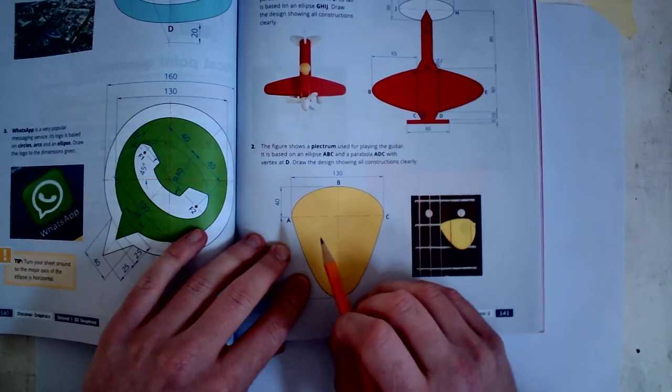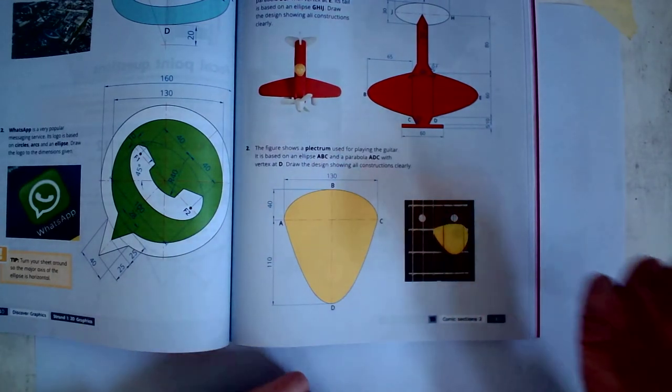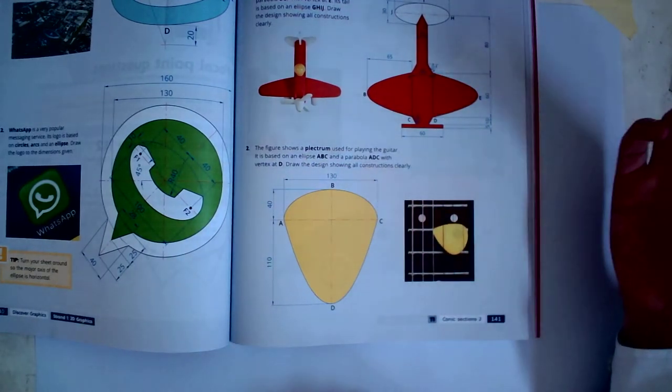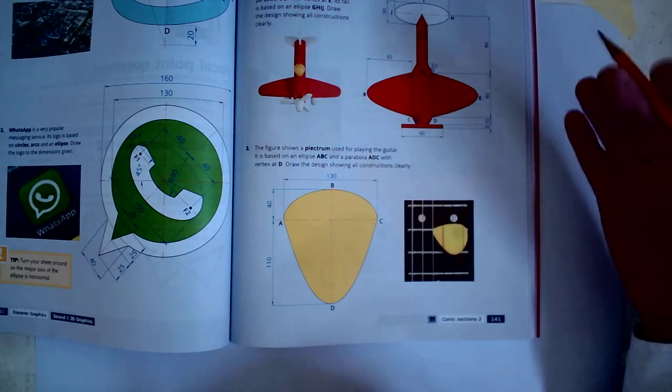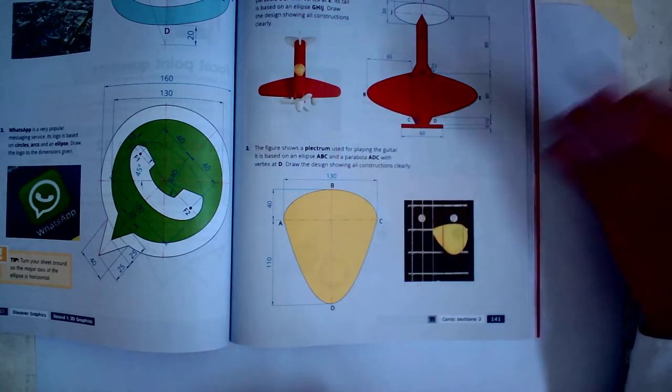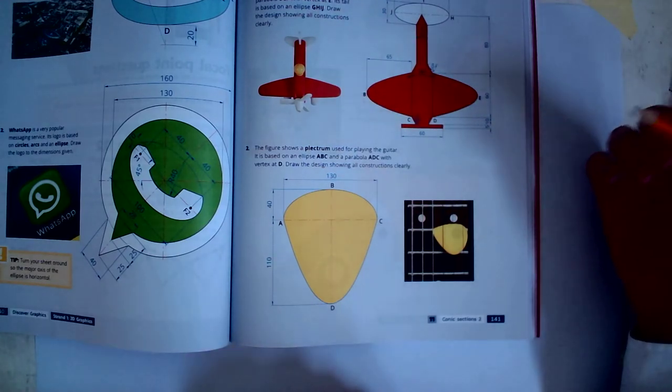Okay, so to start this question, we're going to start with the ellipse. Anytime you get a question like this where you have both an ellipse and a parabola, you always start with the ellipse. Trying to position the ellipse after you have other items drawn tends to be more difficult and can cost you time.